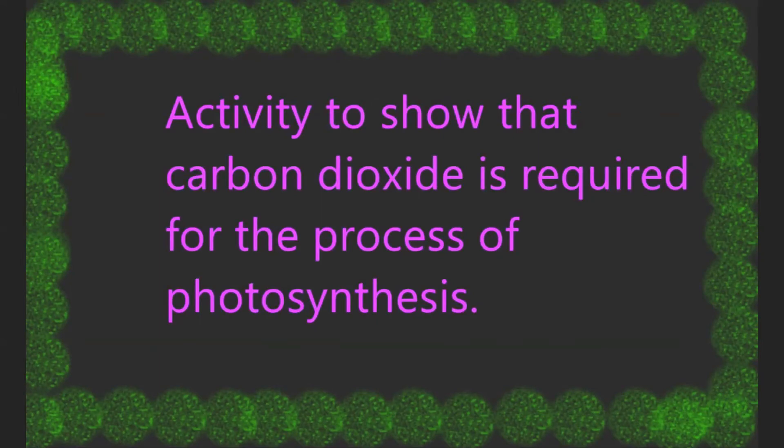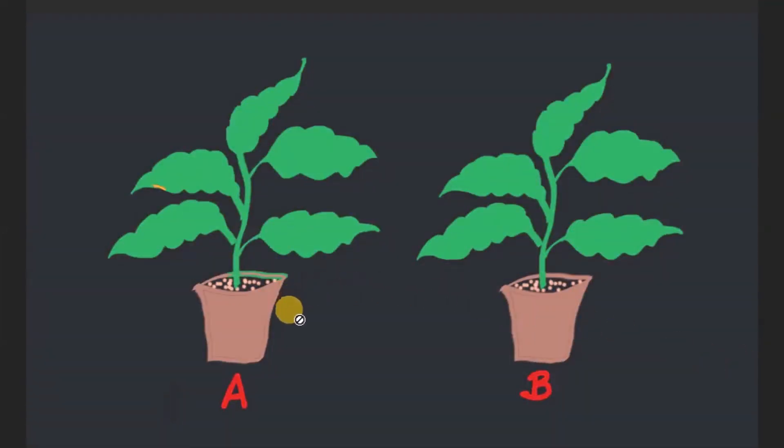Our next activity is to show that carbon dioxide is required for the process of photosynthesis. For this activity, we will take two potted plants with almost the same size and same height. Then we will keep these plants in the dark for at least three days.